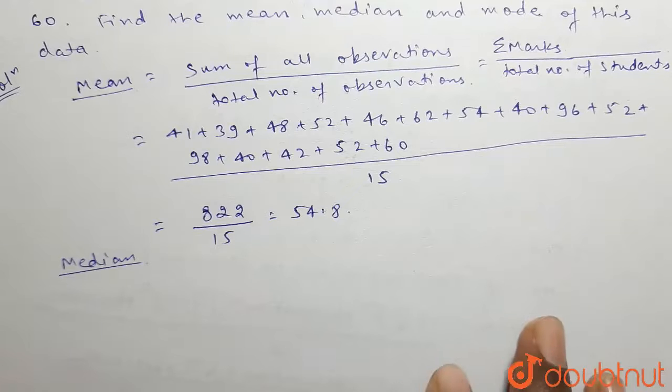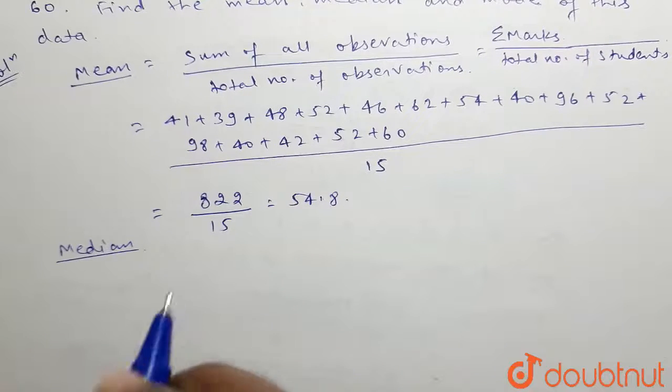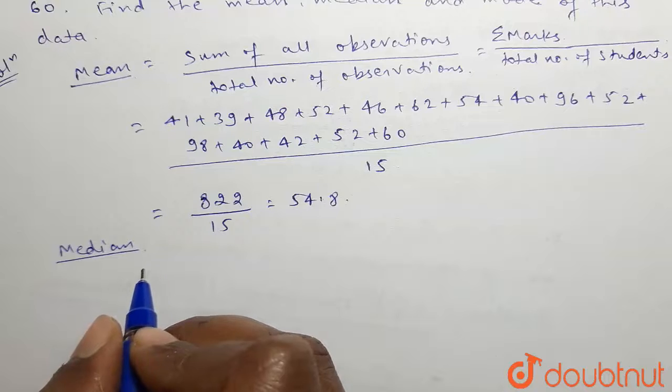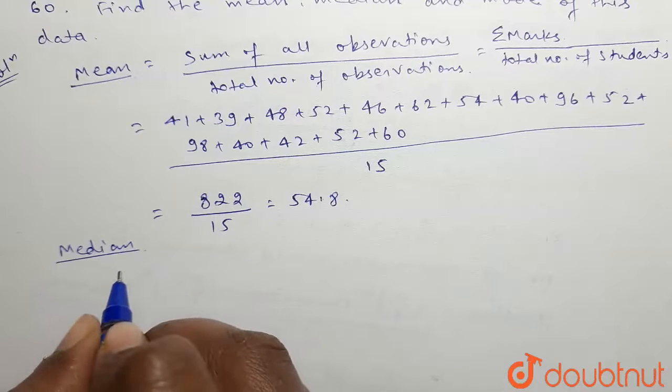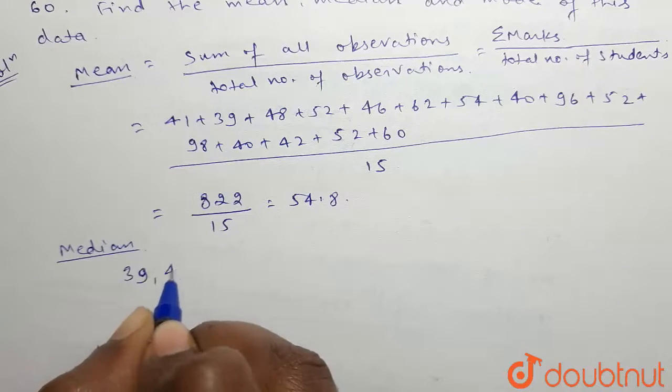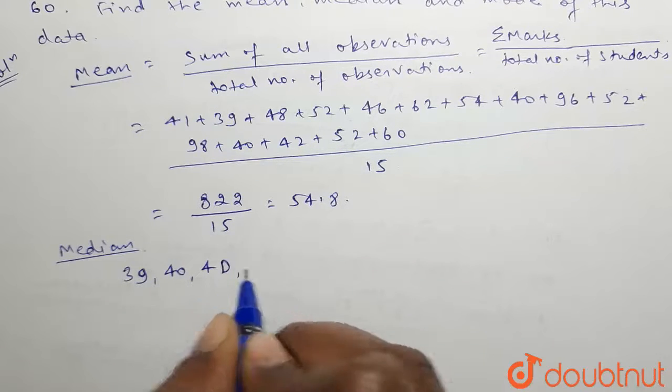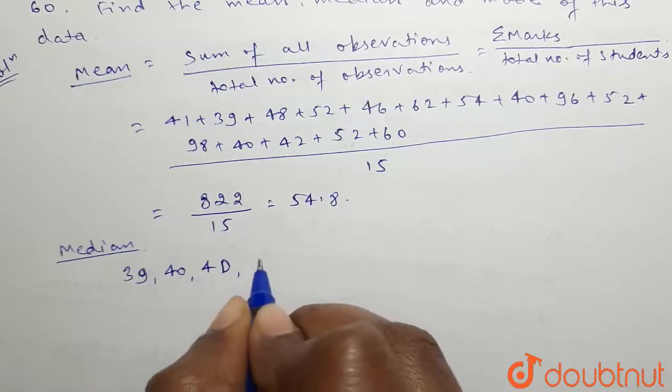Now to find the median, first we have to arrange the given data in ascending order. After arranging the data in ascending order, we get: 39, 40, 40, 41.